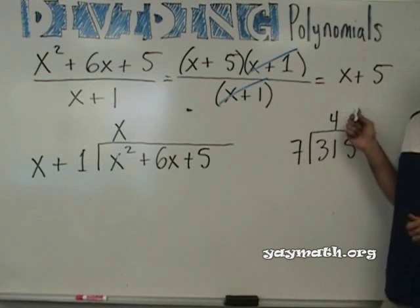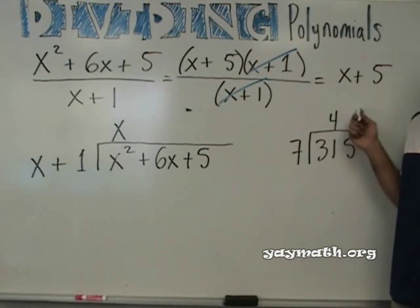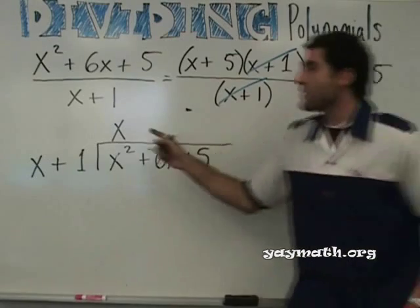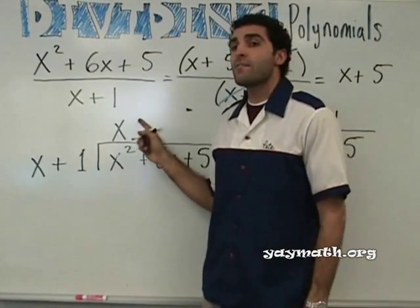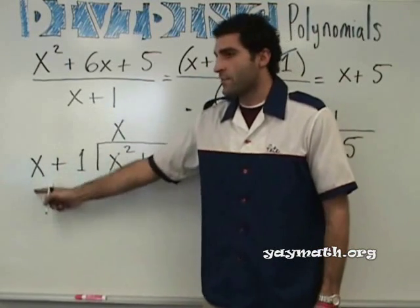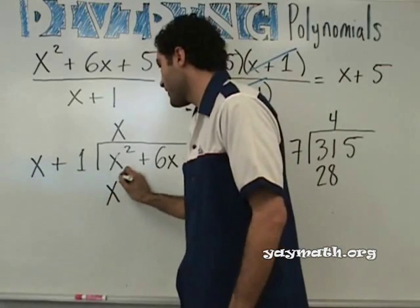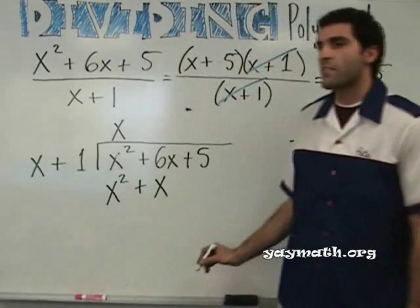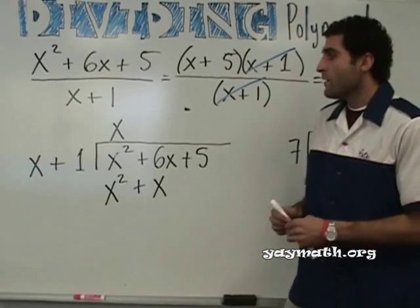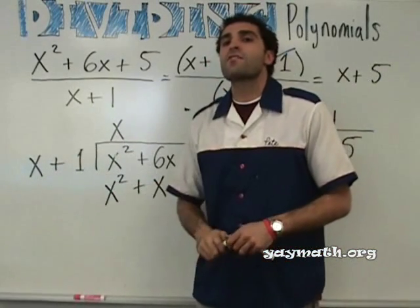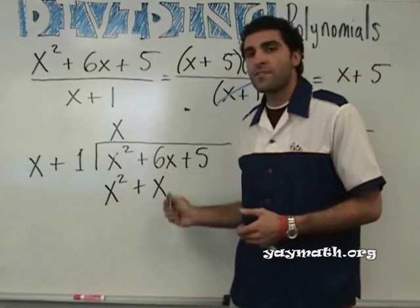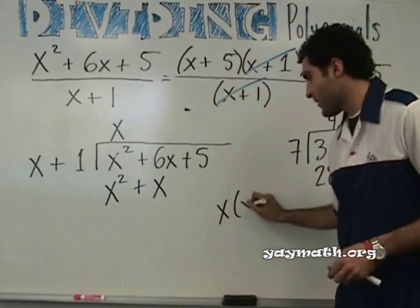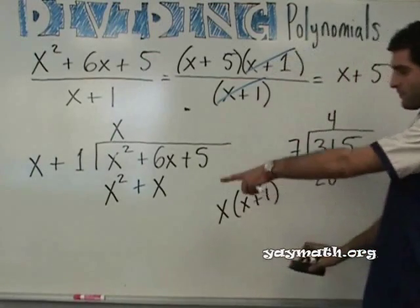Now we're over here. What do we do with the four? We multiply by seven and put it down here. Four times seven is twenty-eight. We put it down here. So what do you think we do with the X? X multiplies by this term — X multiplies with X making X squared, X multiplies by one making X plus one. So X times X plus one is X squared plus X.